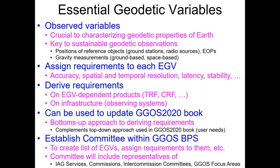You can even derive requirements on the infrastructure needed to observe that variable — how precise or accurate the observation needs to be. Once you have those requirements, that could then be used to update the GIGOS 2020 book. This is a bottoms-up approach to deriving requirements — you look at the observations and flow the requirements up to the derived products like the reference frame. This bottoms-up approach would complement the top-down approach used in the GIGOS 2020 book, where we looked at the user needs — what accuracy is needed on some observation in order to support, say, sea level rise studies.